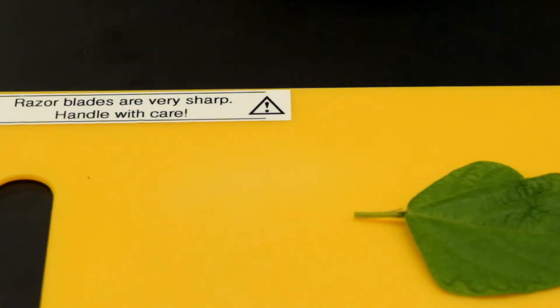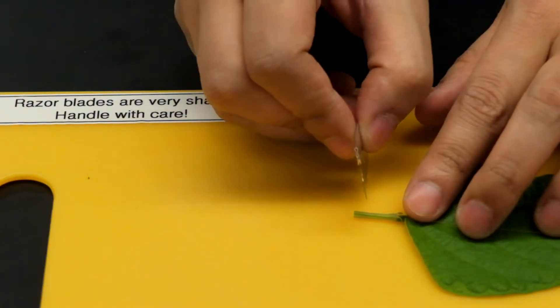Once you have selected your leaf we'll then use a razor blade to produce a clean cut on the stem.